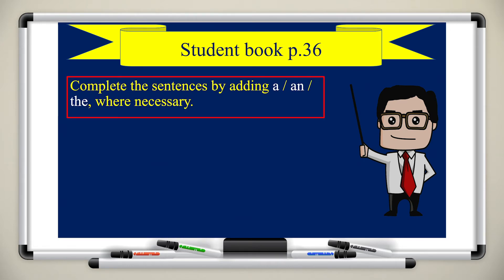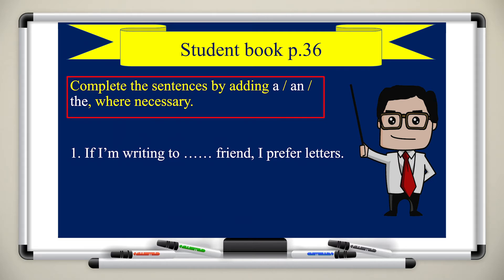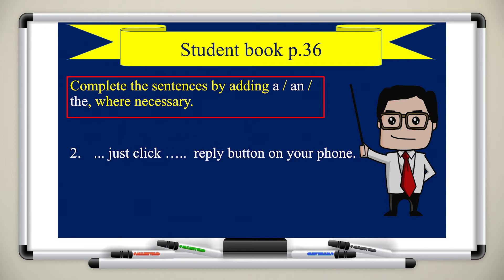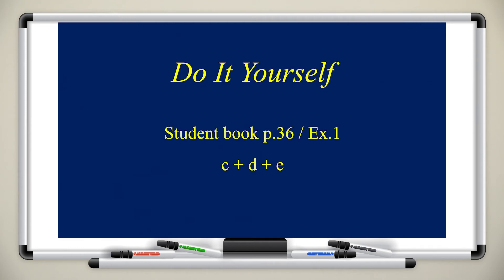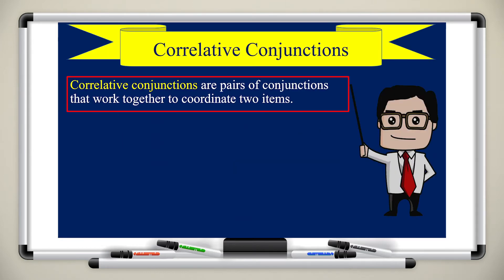Let's practice from student book page 36: complete the sentences by adding 'a,' 'an,' or 'the' where necessary. Number one: 'If I'm writing to a friend I prefer letters' — we use 'a' because 'friend' begins with a consonant. Number two: 'Just click the reply button on your mobile phone' — we use 'the.' Now do it yourself: student book page 36, exercise one. We answered A and B; answer the rest.